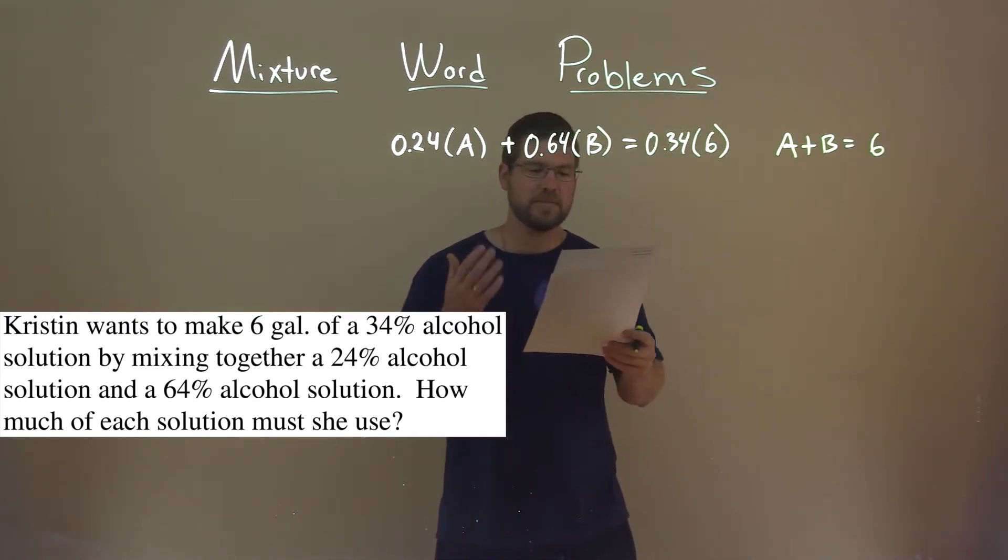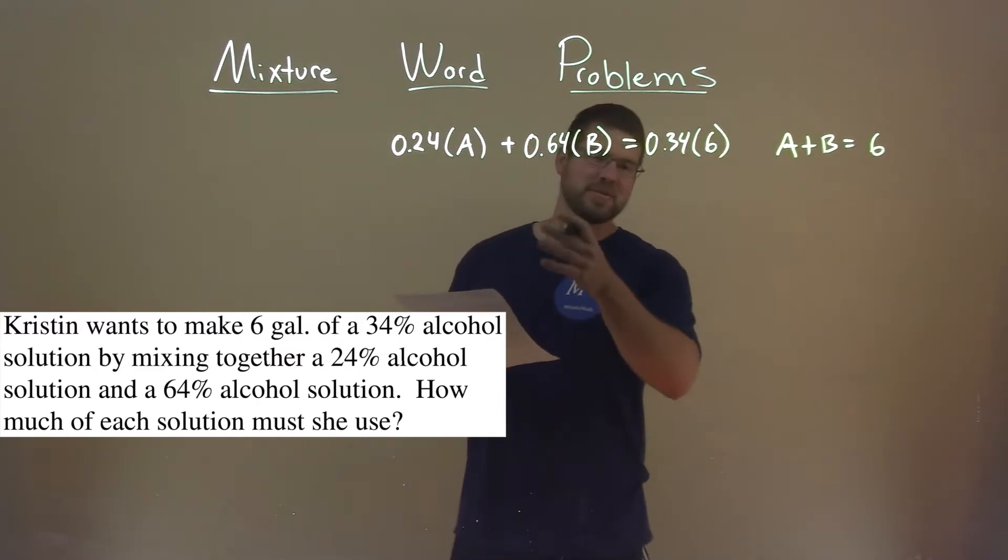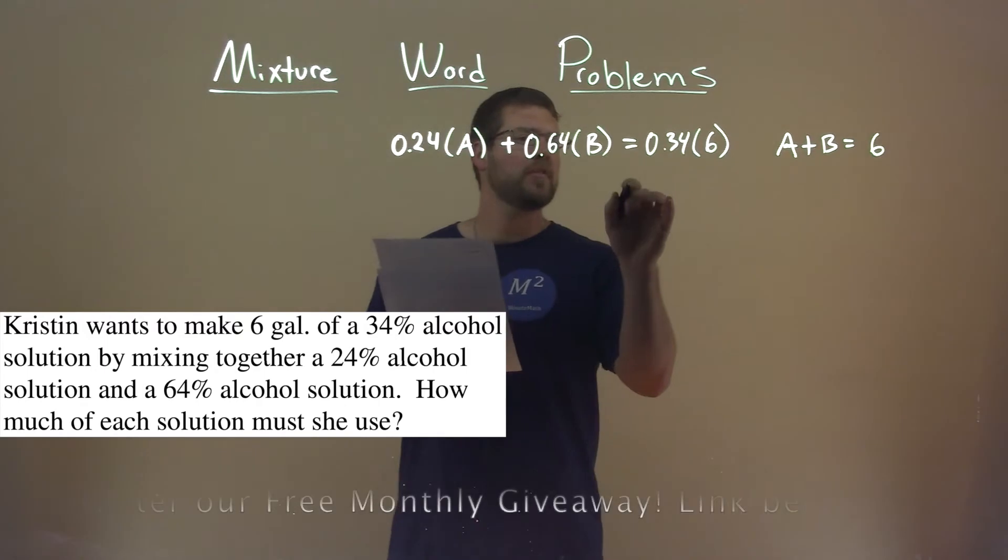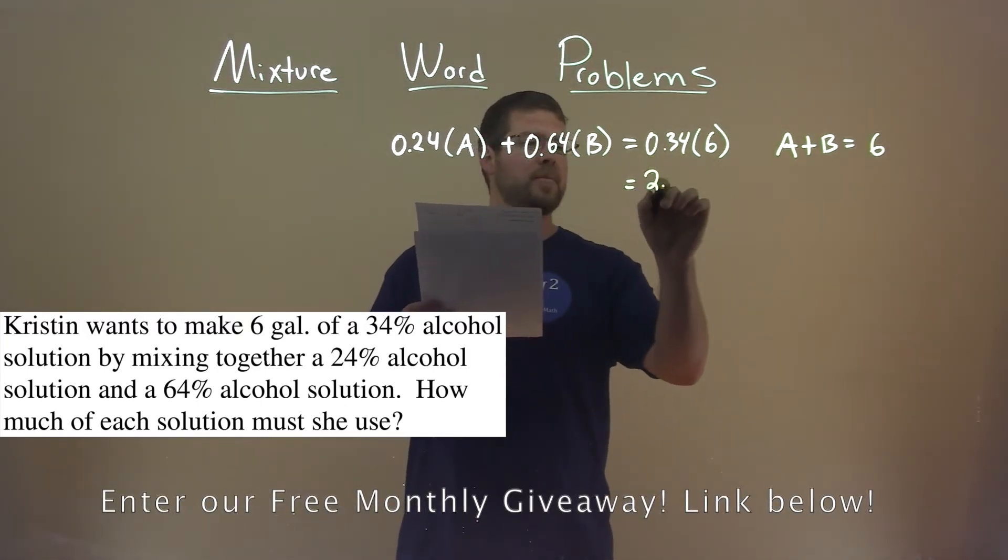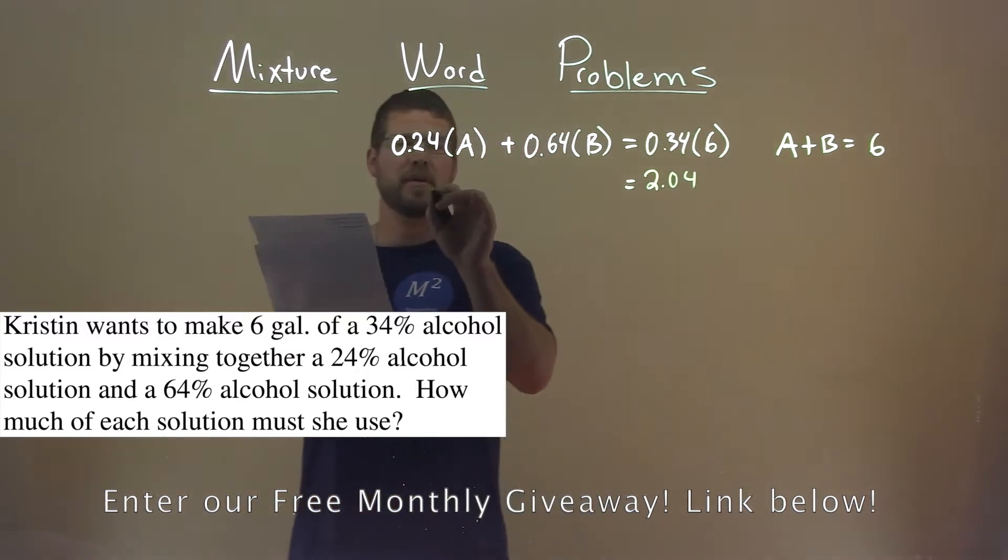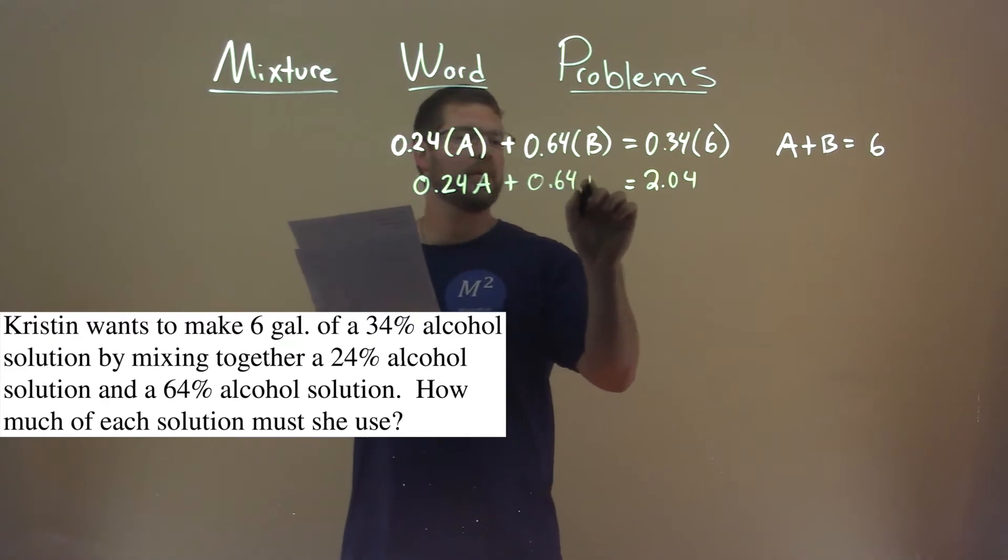So now we have two solutions here, or two equations. Two solutions, but two equations. So now we can solve this. Let's simplify the first part here. 0.34 times 6 comes out to be 2.04. Let's bring down the rest. 0.24A plus 0.64B.